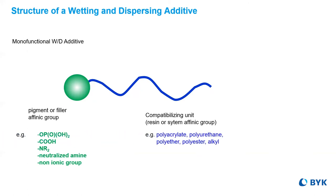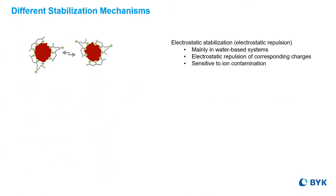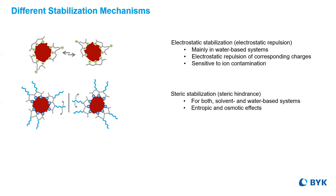Here you see typical chemistries listed for each part. There are three major stabilization mechanisms. The first is electrostatic repulsion, mostly used in aqueous coatings, but can be impaired by the presence of ions. The second, steric hindrance, is for use in most all system types. Generally the strongest mechanism, since ions aren't a concern, but compatibility is still a must.